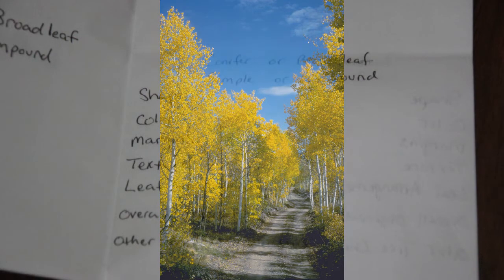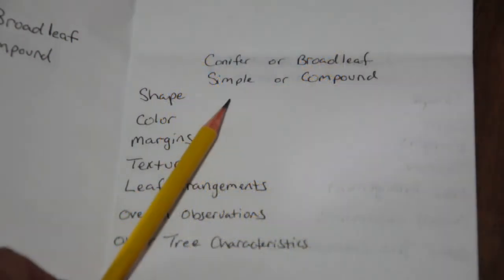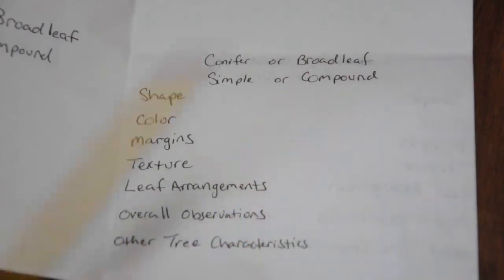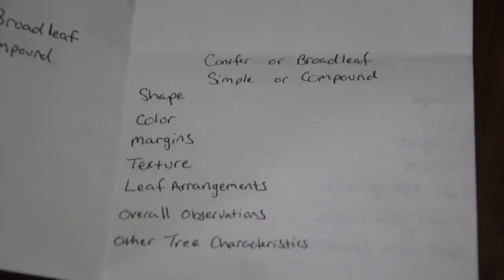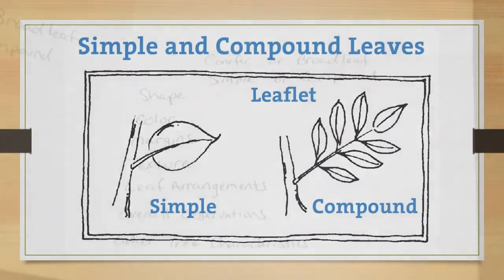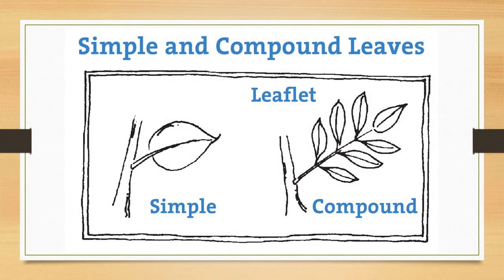The next thing we'll take a look at is whether our leaf is simple or compound. Simple leaves have only one piece to them — maple, oak, aspen, sycamore, and many other trees have simple leaves. Compound leaves, on the other hand, are made up of several leaflets. Ash, walnut, and sumac trees all have compound leaves.